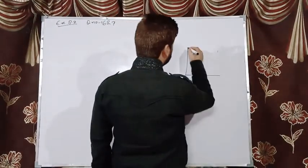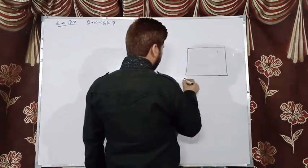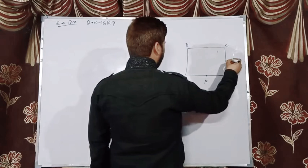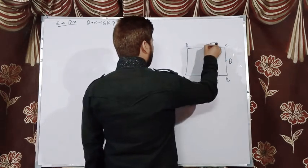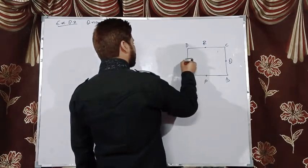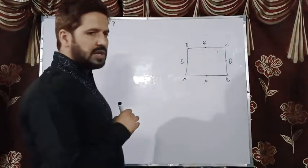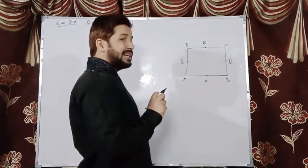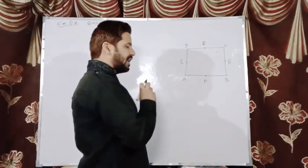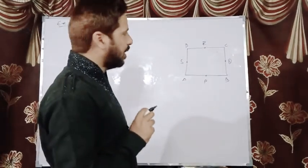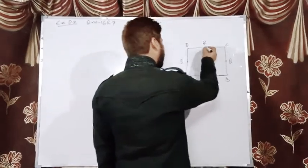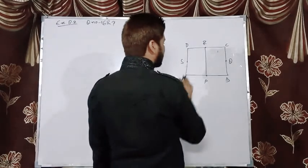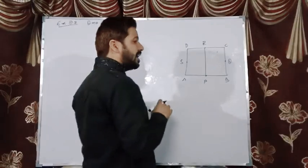For Question 6, we have a quadrilateral given. Let us take quadrilateral ABCD. The four sides of this quadrilateral have midpoints given. Let P be the midpoint of side AB, Q be the midpoint of side BC, R be the midpoint of side CD, and S be the midpoint of side DA. So quadrilateral ABCD is given with the midpoints of its four sides.